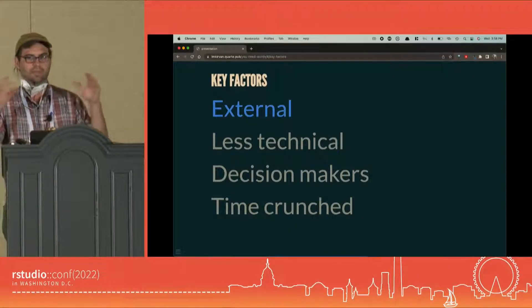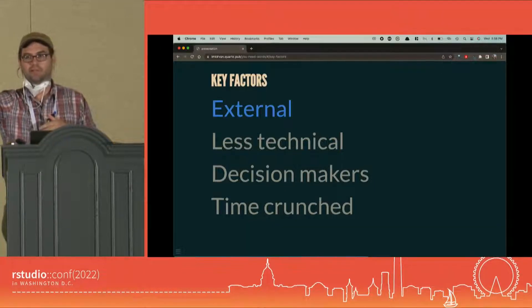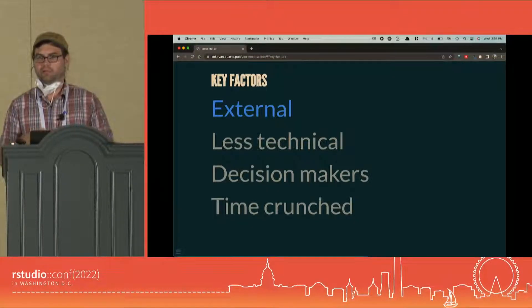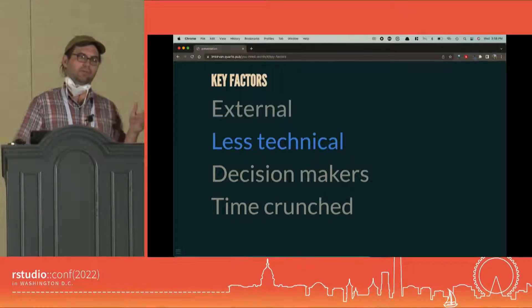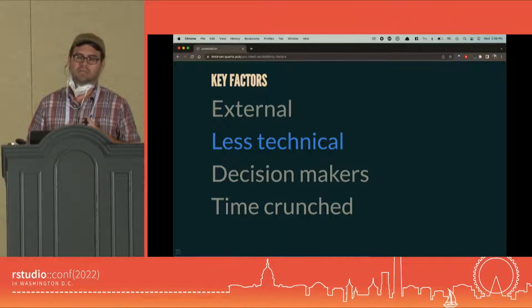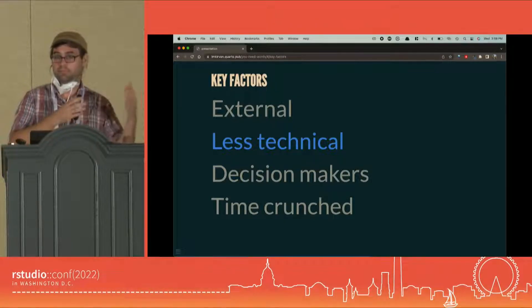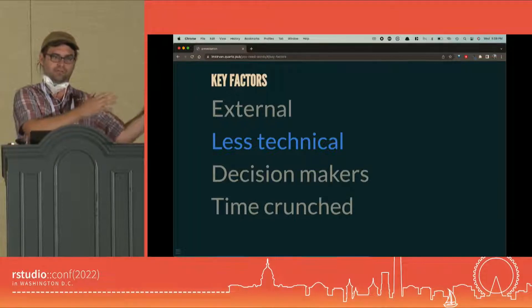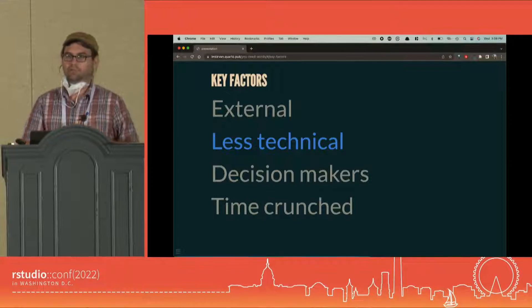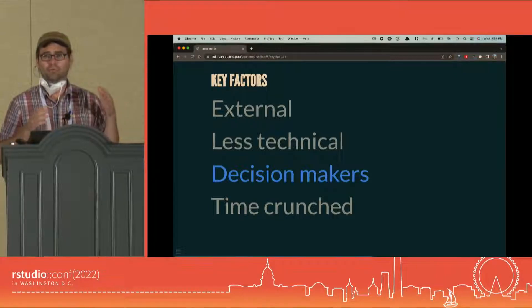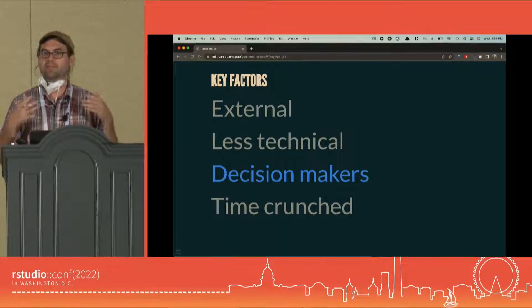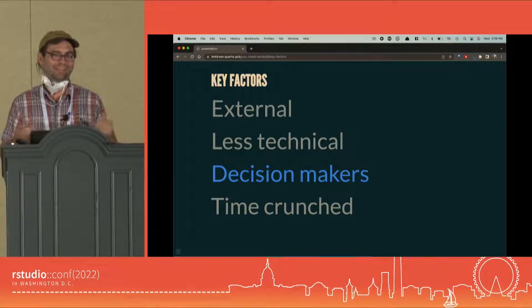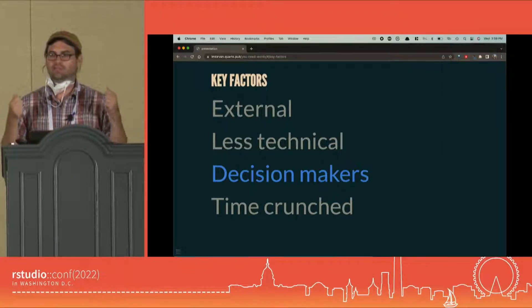To summarize the key factors: the biggest one is external — if they're outside your org, they likely have none of your context. But even within your org, think in concentric circles: as you move further from your team, you need to add more context. Another key factor is a less technical audience — you can't use shortcuts like presenting an ROC curve to an executive and saying 'my model's really good,' because they're not going to get that. Decision makers are important because they need context to trust what you're telling them. Without appropriate context they'll reject your findings even if you're right — and I've had that happen, which is pretty disappointing.